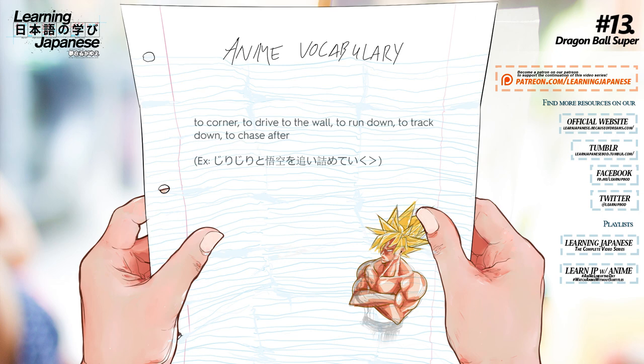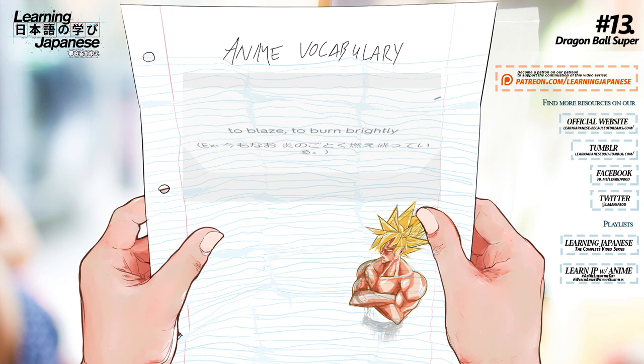燃え盛る — To blaze, to burn brightly. 焦がす — To scourge, to singe, to char.